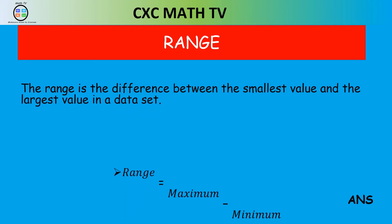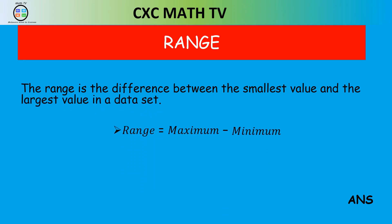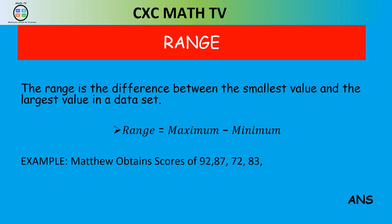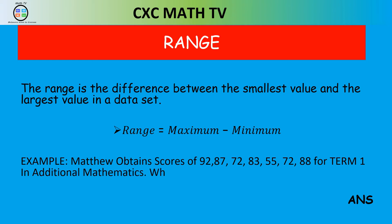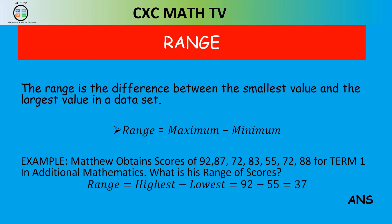Let's start with the range. The range is the difference between the smallest value and the largest value in a data set — that is, maximum minus minimum. Going back to Matthew's test scores, his highest is 92 and his lowest is 55, so the range is 92 − 55 = 37.